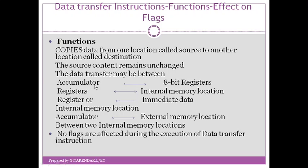First, we can transfer or copy data from the accumulator to any of the 8-bit registers, or vice versa — data can also be copied from any 8-bit register to the accumulator. The transfer can be in either direction. Second, data transfer can occur between the registers and an internal memory location — from register to internal memory location or from internal memory location to any register, and this is also bidirectional.